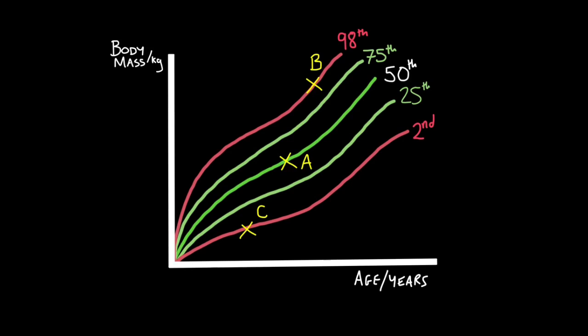Basically, a percentile growth chart has a number of lines. Each line is given a value, the 98th percentile, 75th percentile, 50th percentile and so on. This is how you'd read one. First, you'd find your age on the x-axis. So let's say this is your age. Then you'd read your y-axis to find your mass. So let's say this is my age and if I go up, this is my body mass. So I have to draw a plot here.